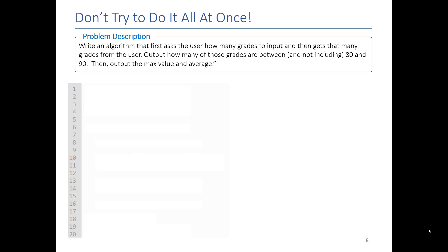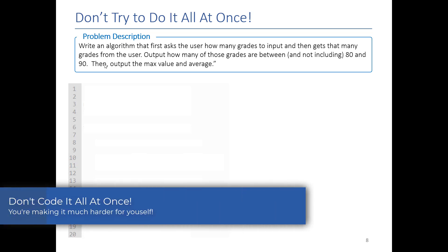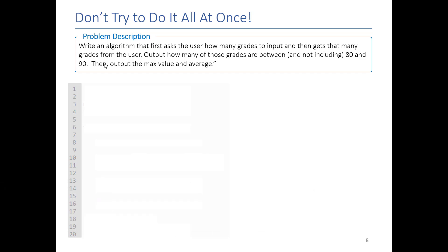Now that we know how to use a for loop, let's work on a problem that requires a loop. We're going to write a program that first asks the user how many grades to input, then gets that many grades, outputs how many grades are between 80 and 90 (not including 80 and 90), and outputs the max value and the average. A lot of you will be tempted to write this all at once, but it's easy to get bogged down in details. I'm going to present a generalized process for approaching these problems.